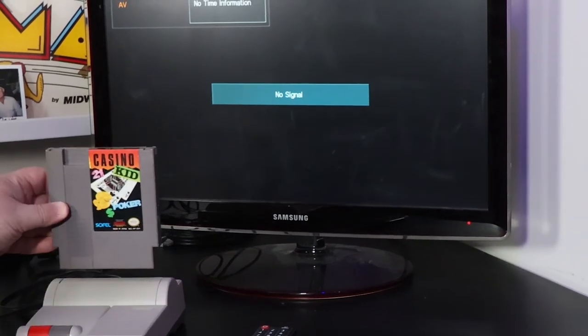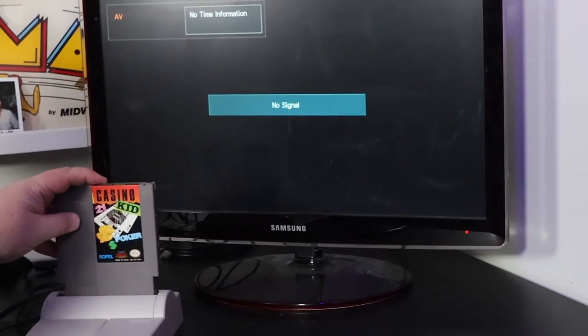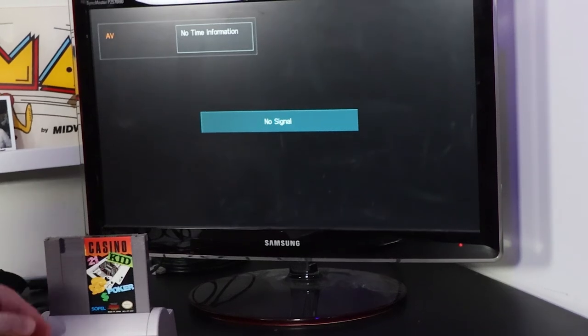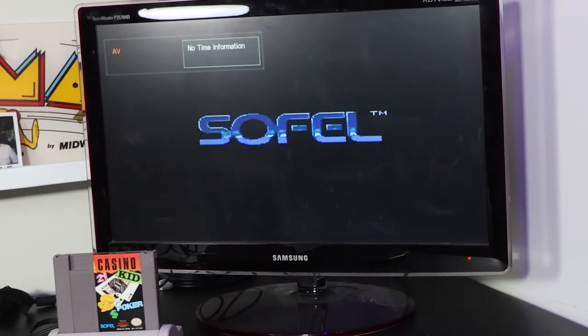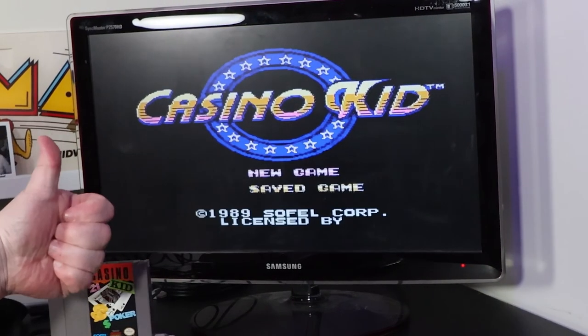So here we are, moment of truth. We're plugging it into our NES, our top loader, and turning it on. And all that looks great, folks. That's very promising. And it appears our title screen has come up, and we now have a working cartridge.